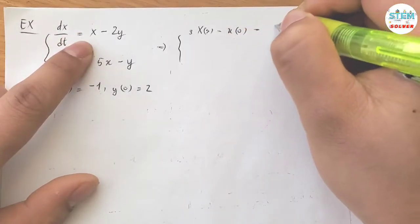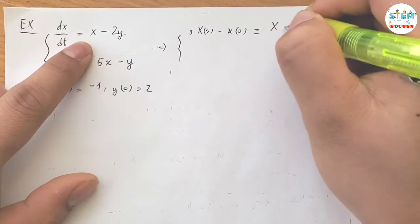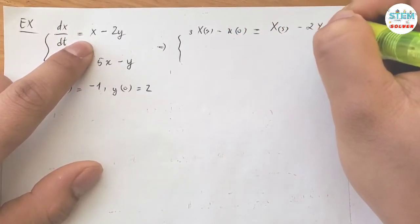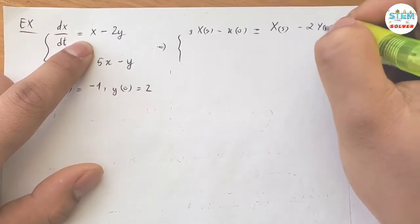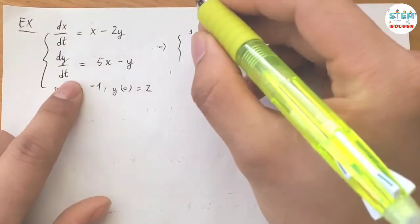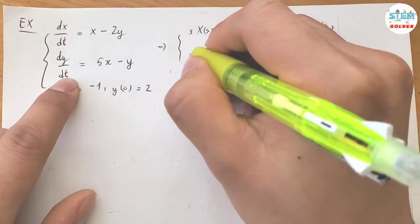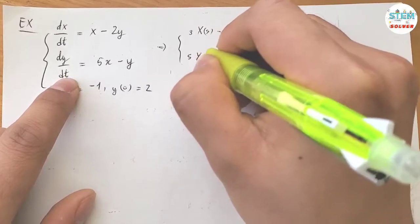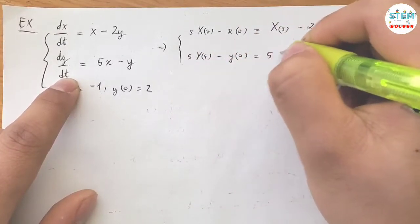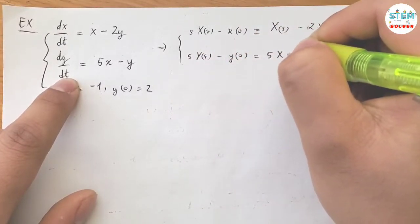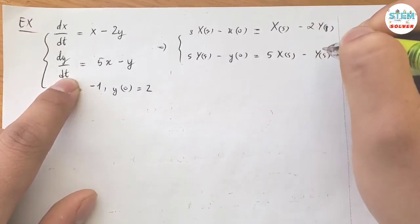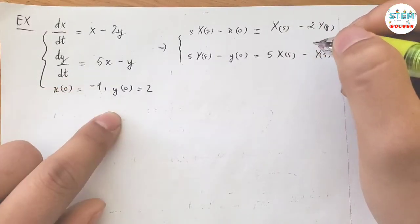For the first equation we have s·X(s) minus x(0) equals X(s) minus 2·Y(s). For the second equation we have s·Y(s) minus y(0) equals 5·X(s) minus Y(s).